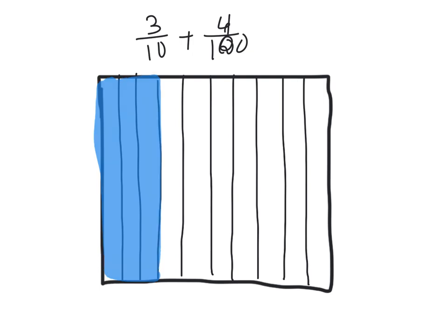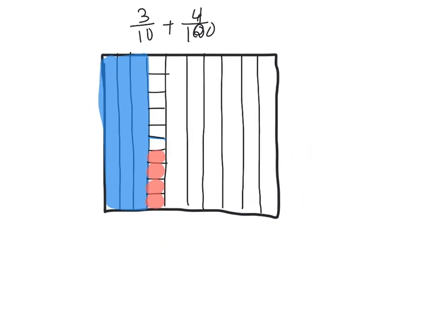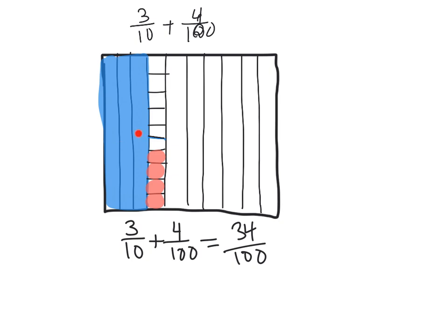To shade in the 4 hundredths, we have to cut this section into 10 pieces — cut it in half, then cut each half into 5 pieces, so these are now hundredths. Then shade in 4 of those hundredths: 1, 2, 3, 4. Zooming out, we know each of these tenths is 10 hundredths. So we shaded in 3 tenths then 4 hundredths, which ends up being 34 hundredths — that's 10, 20, 30, plus 4 more.